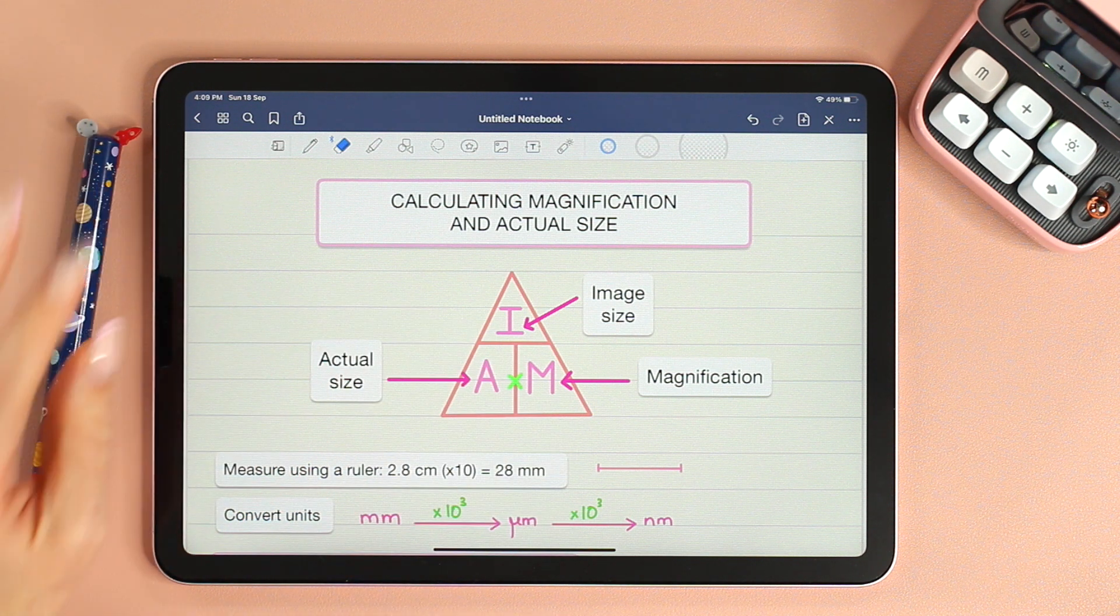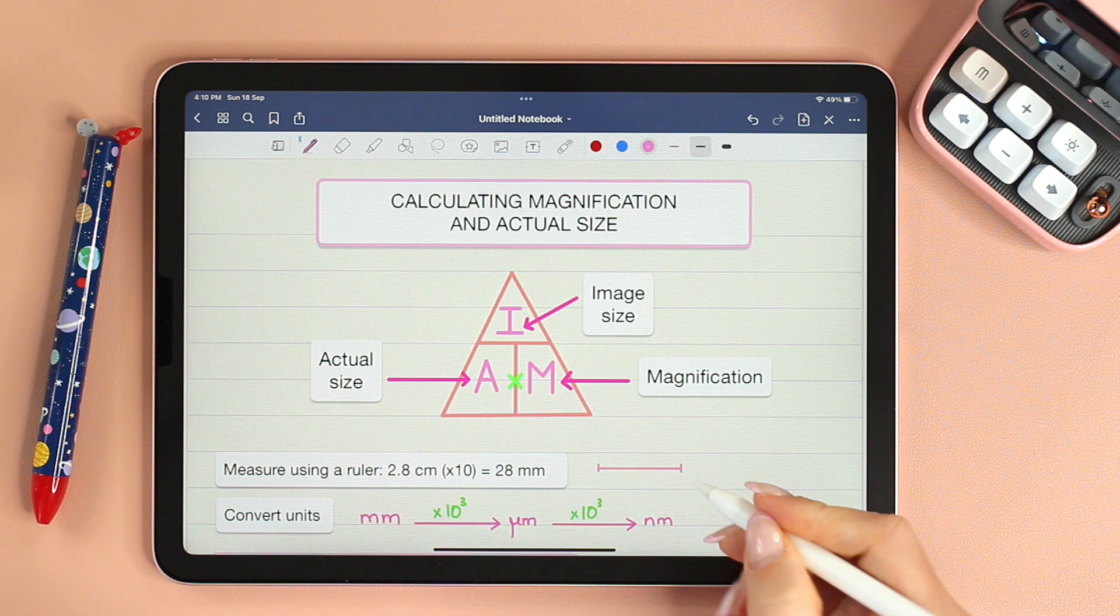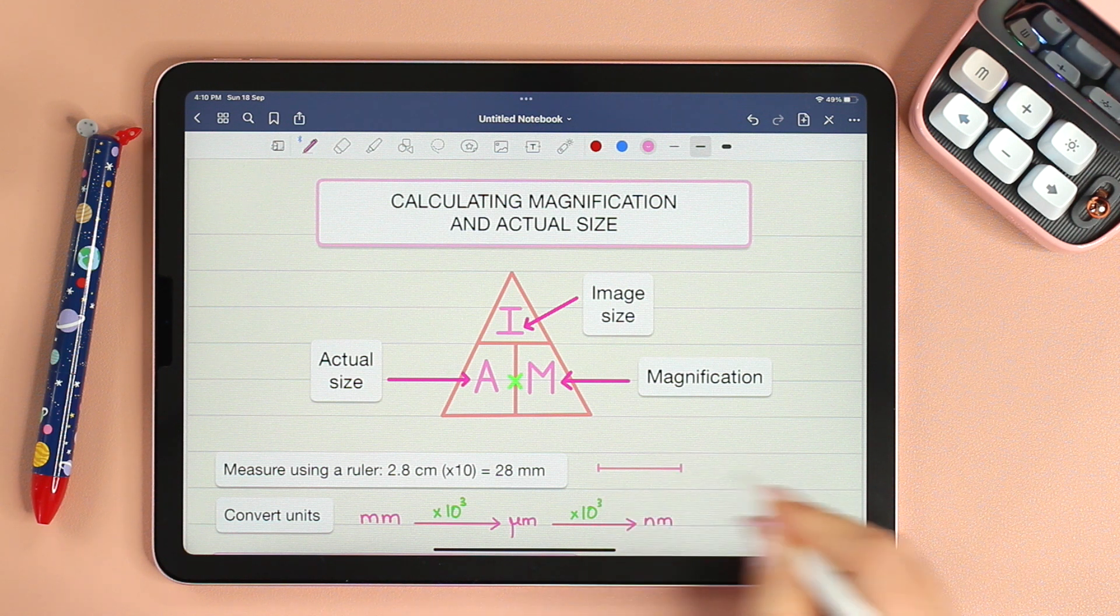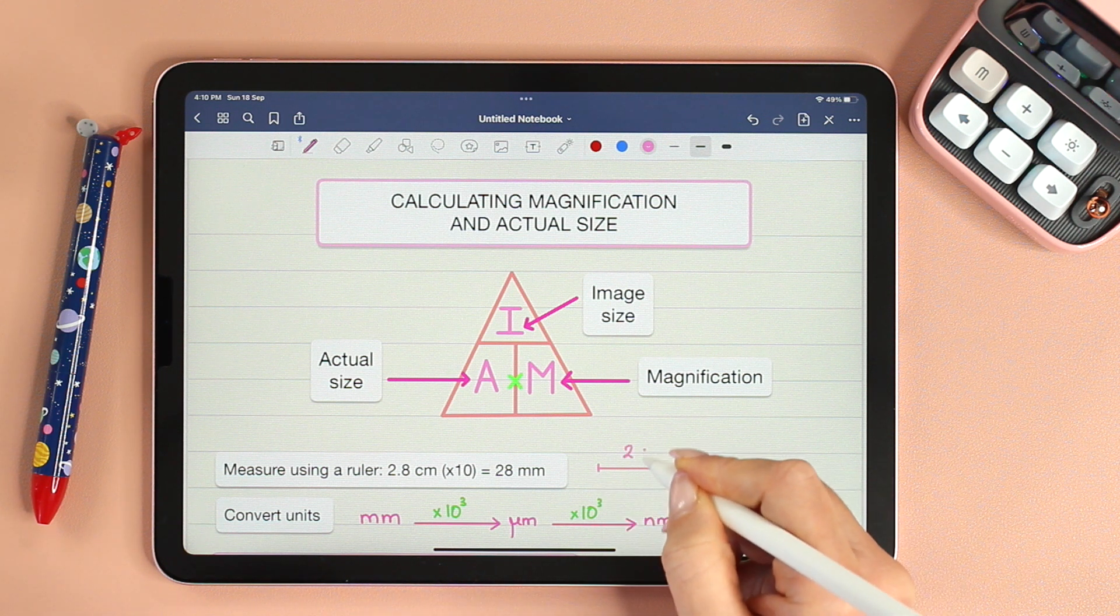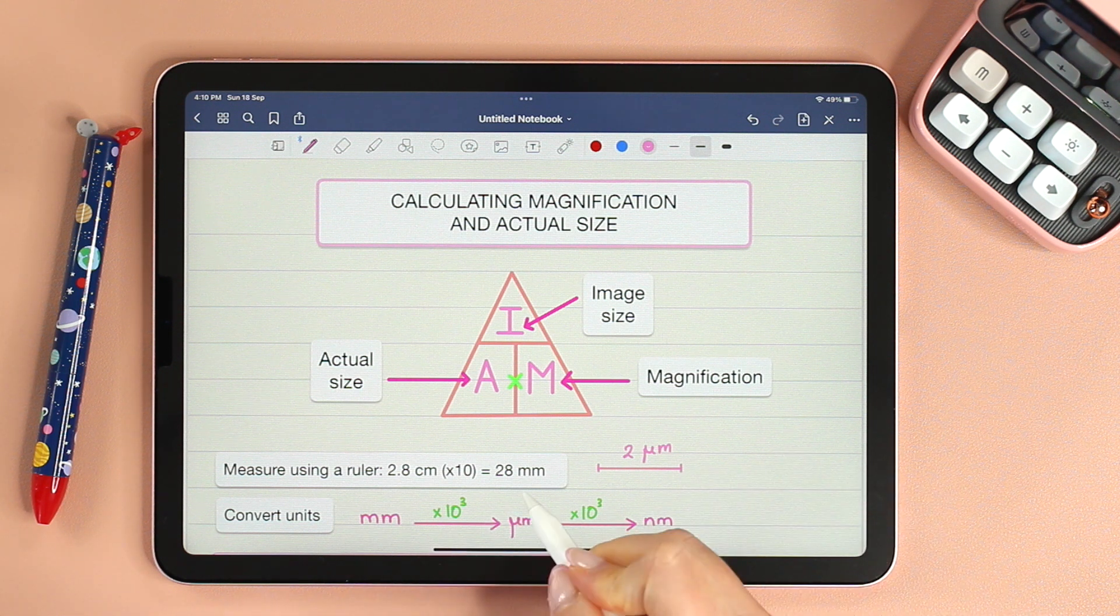my advice is to first convert centimeter to millimeter. Next, if the actual size on the scale bar is in micrometer—let's say this is 2 micrometers—then multiply the size of the image by 10 to the power of 3.